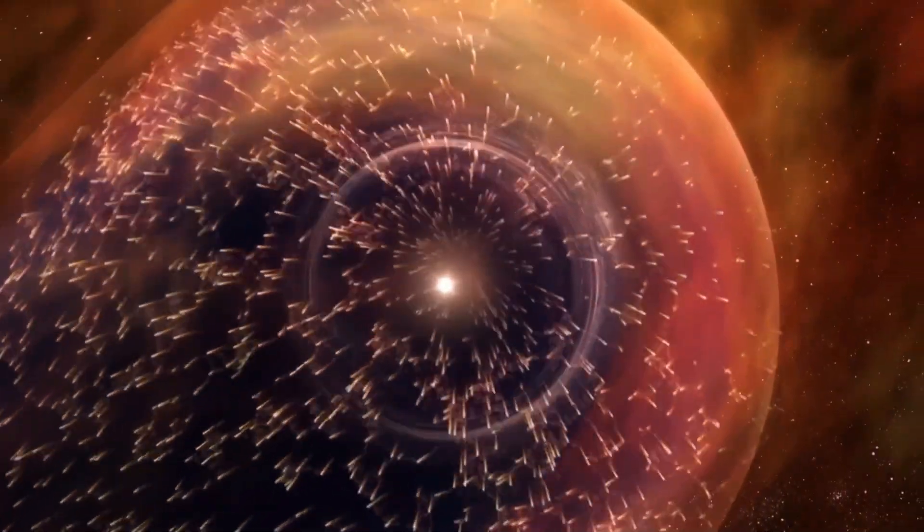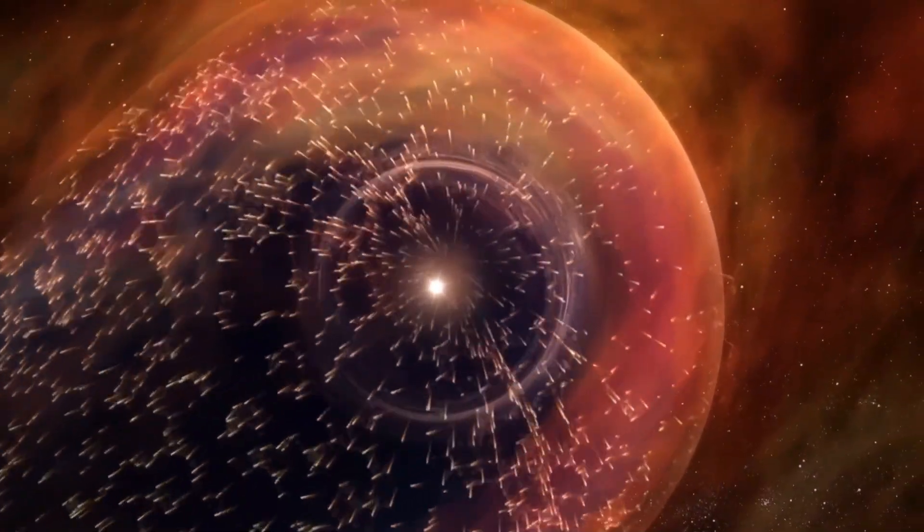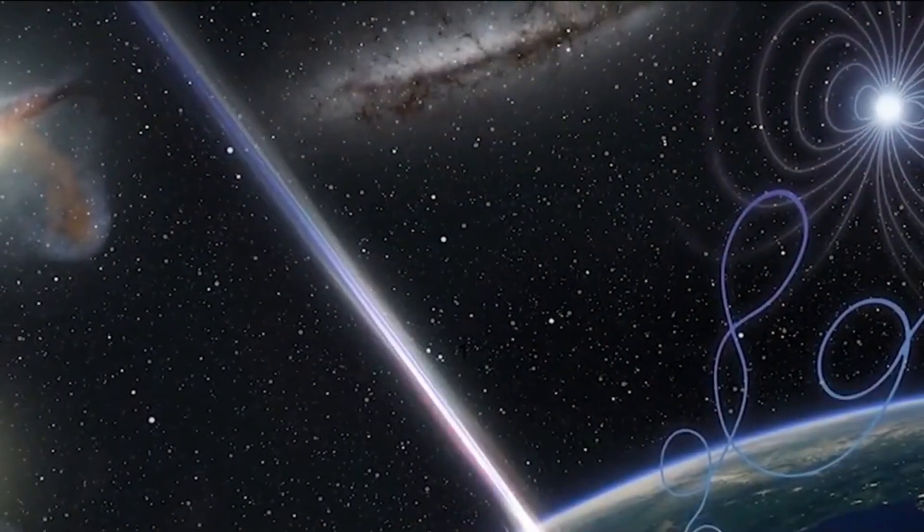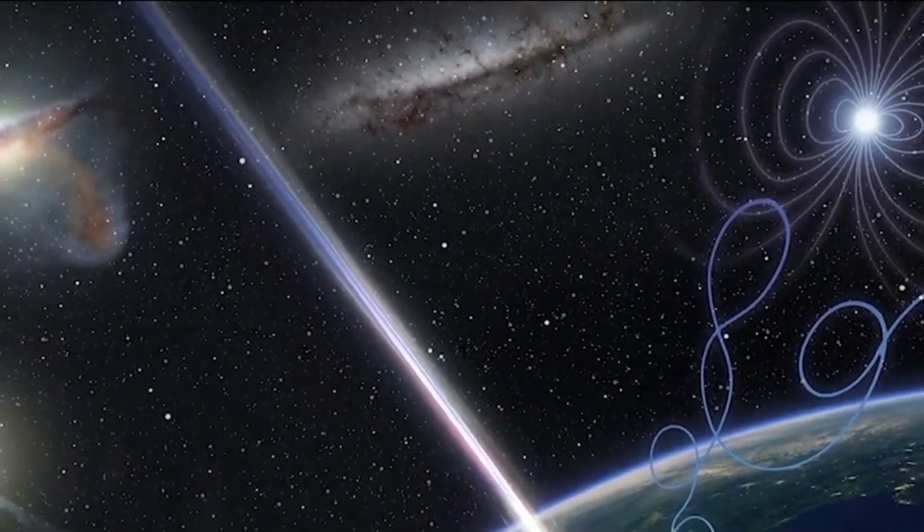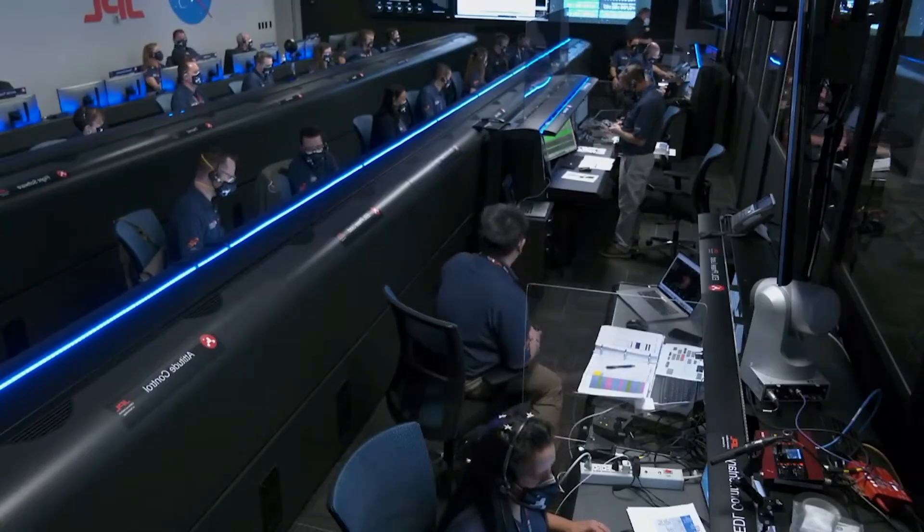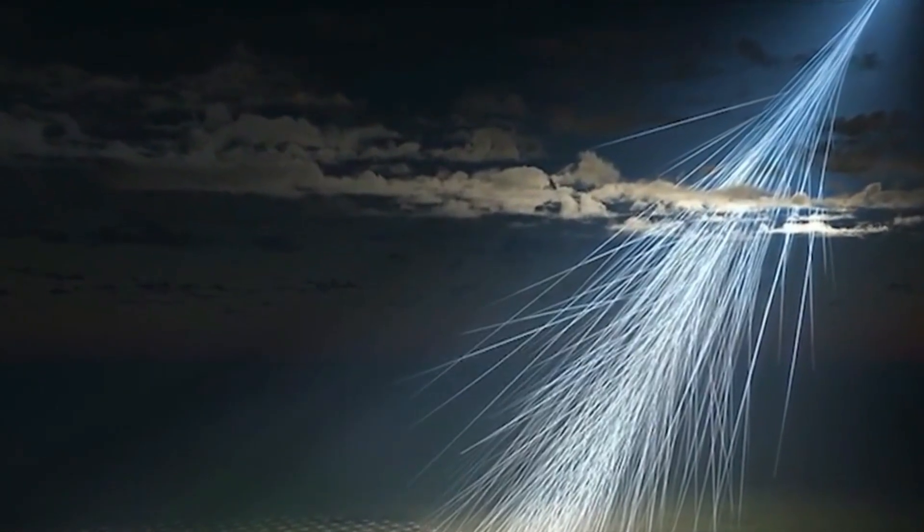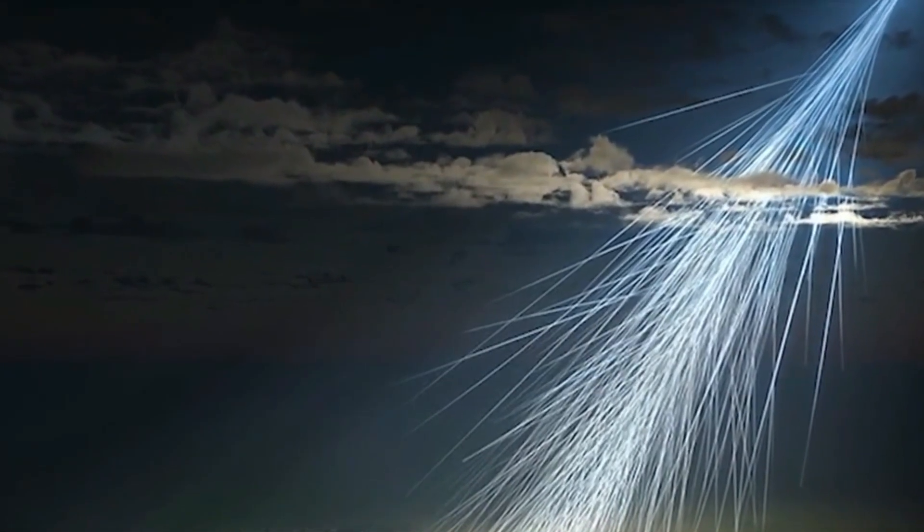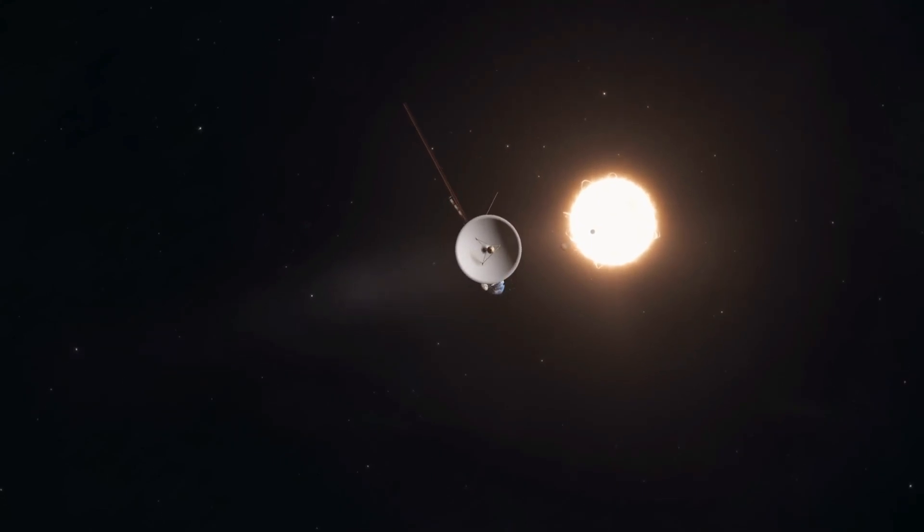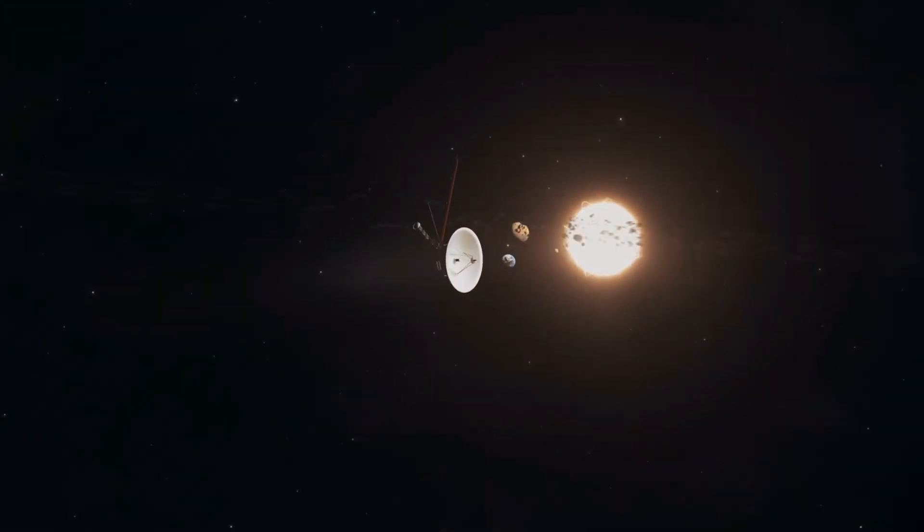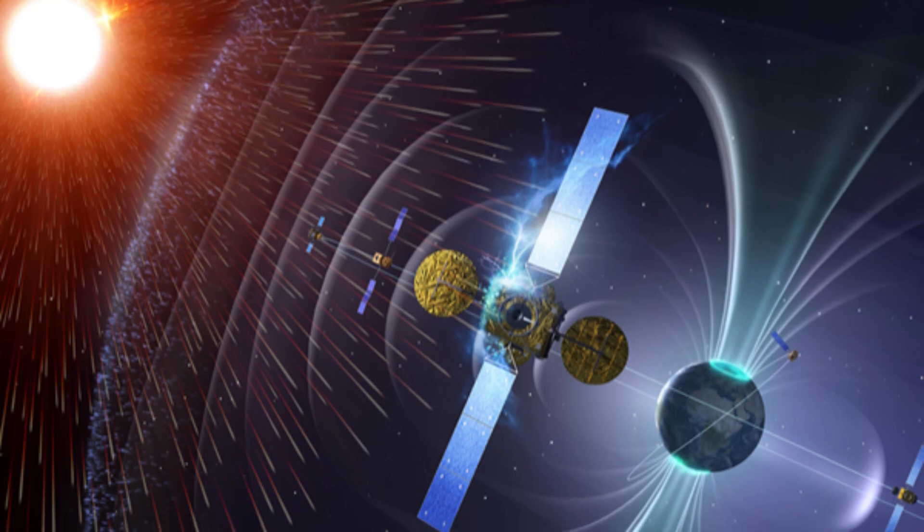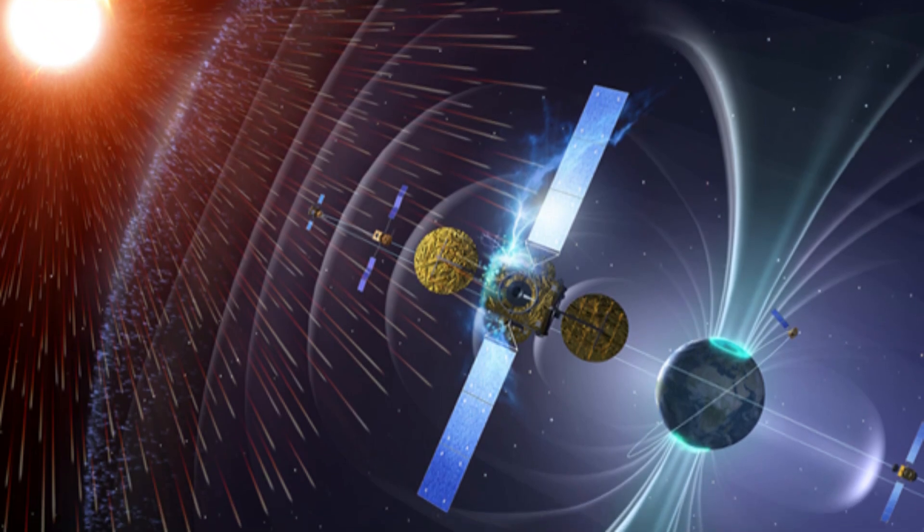Yet at such great distances, this rate is still astonishing. A feat like this pushes the boundaries of what we thought was possible in deep space communications. One of the key reasons this is happening is due to the spacecraft's communication technology, which was designed to survive and transmit for longer than expected. Voyager's high-gain antenna is still functioning, sending signals to Earth with surprising clarity.